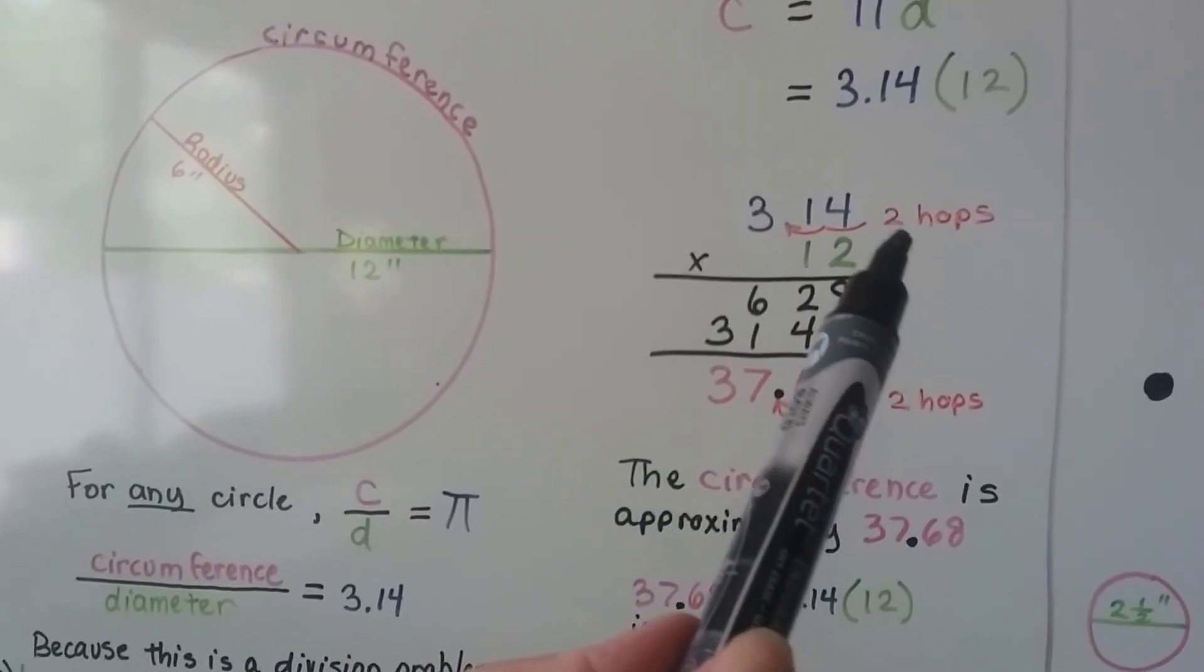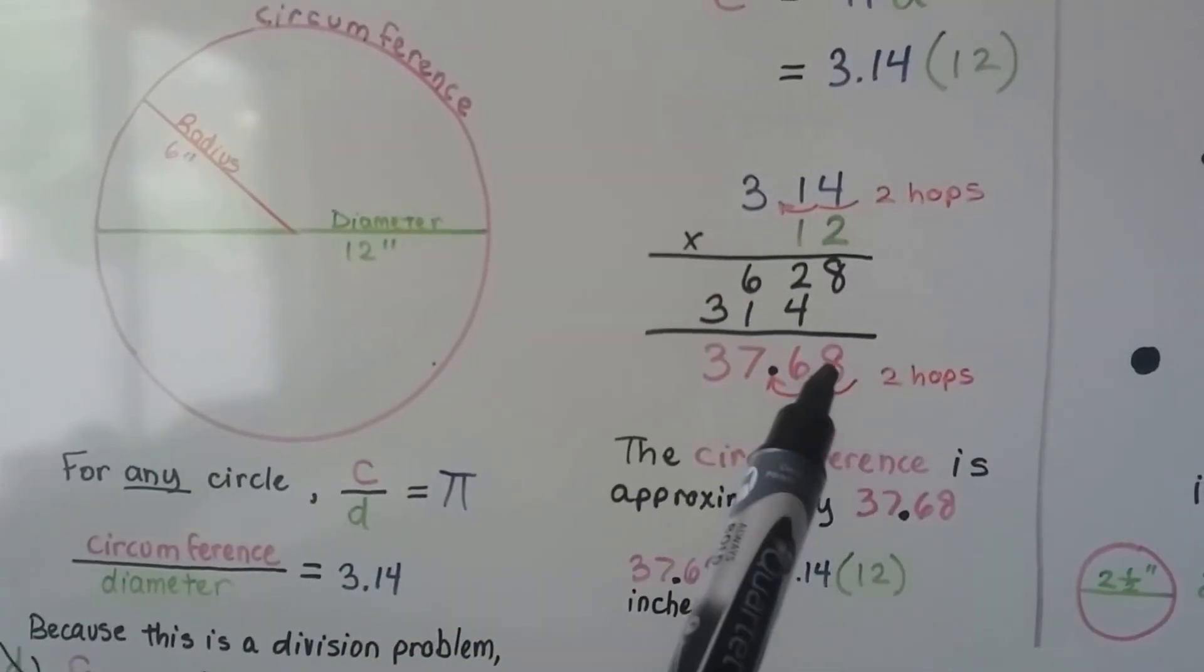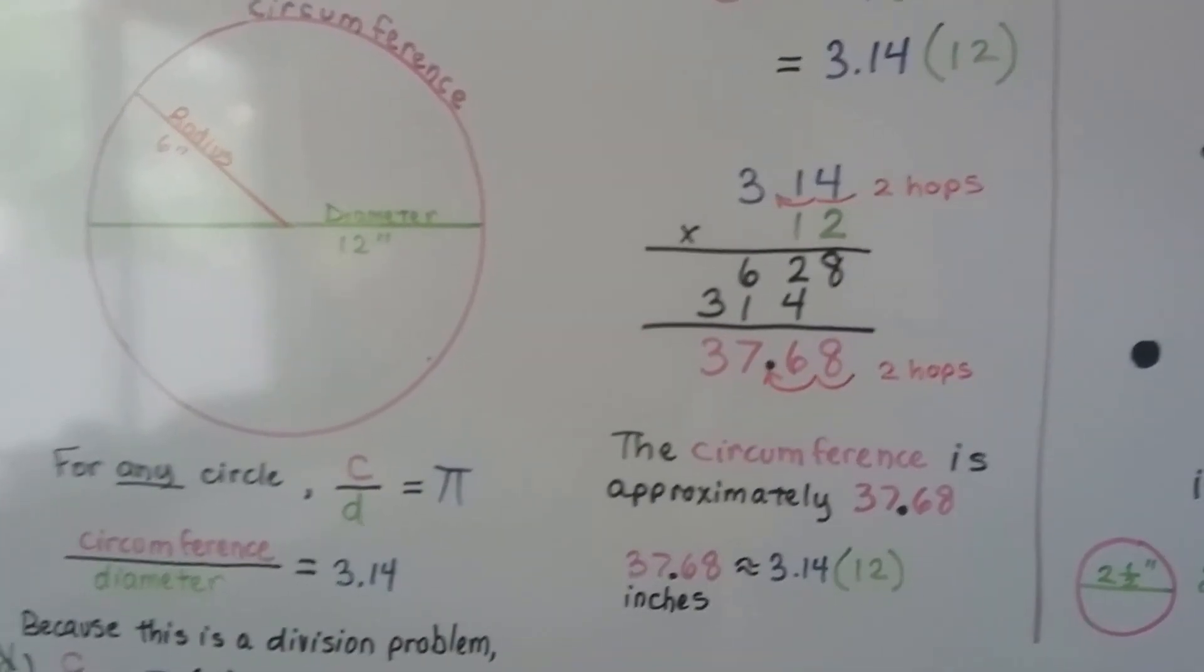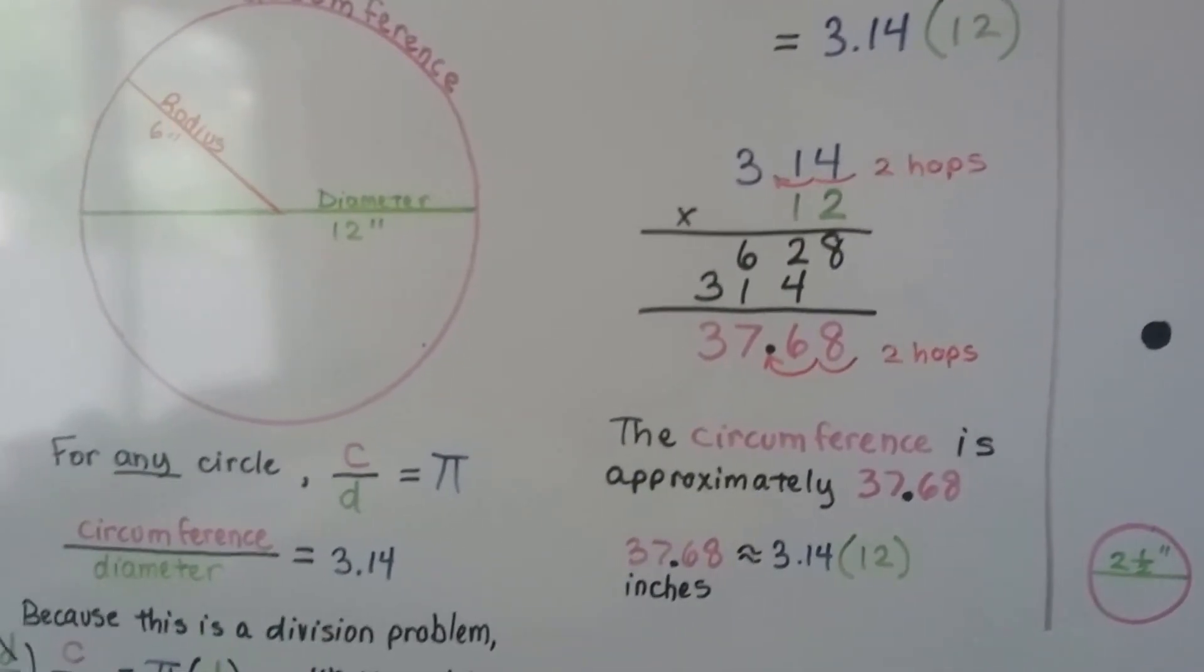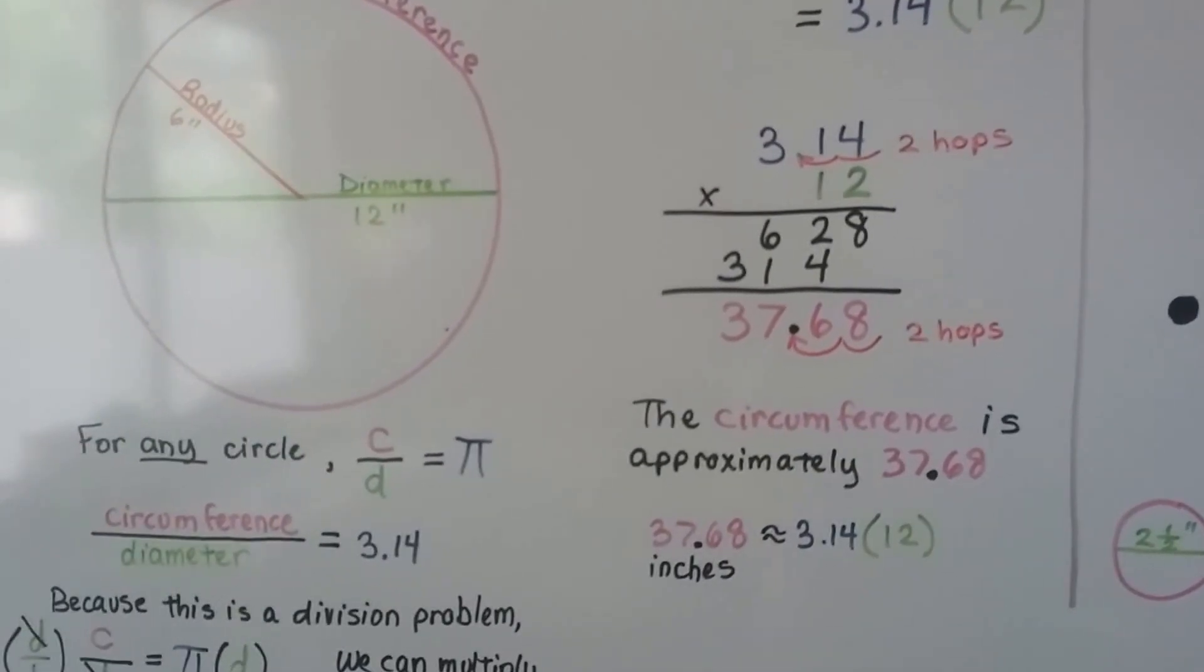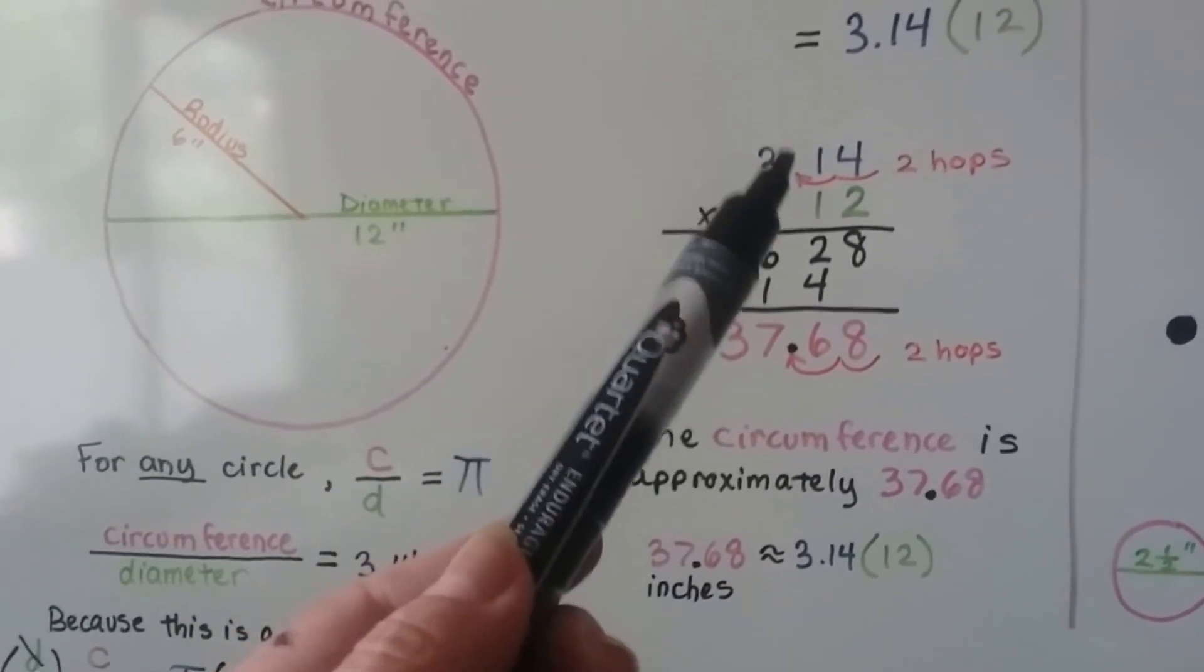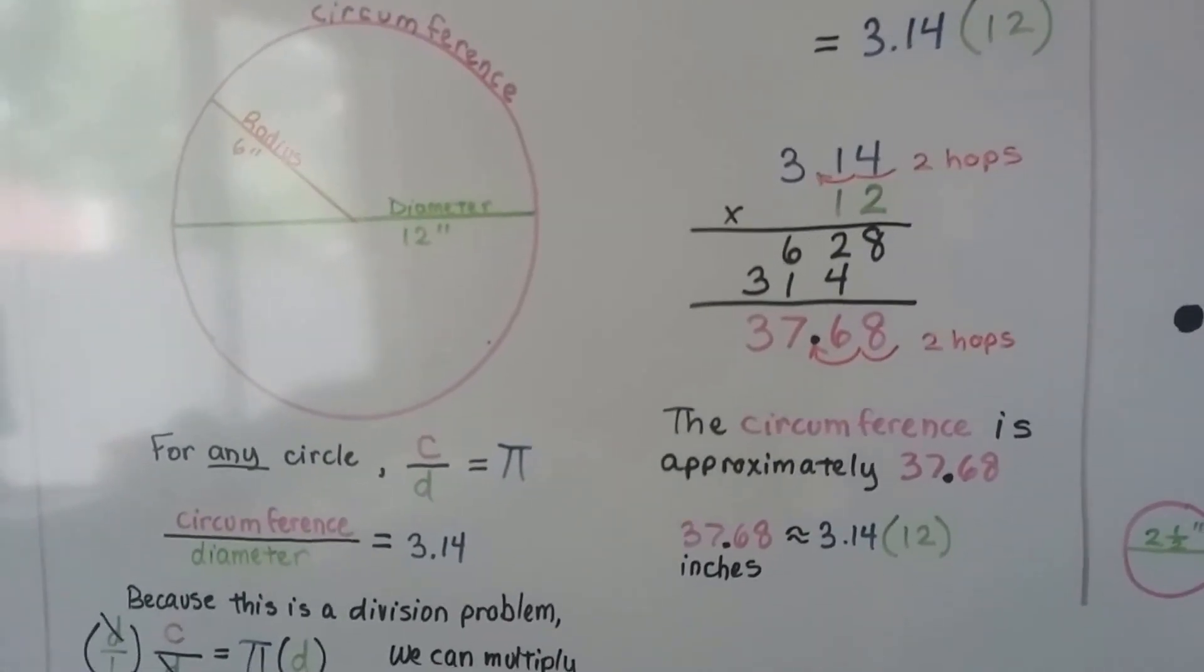Multiplying the decimals, there's two hops of decimals in the equation, so we have to put two hops of decimals into the answer, into the product, so we get 37.68. So the circumference is approximately 37.68, because pi is not exactly 3.14. So we have to use that approximate symbol.